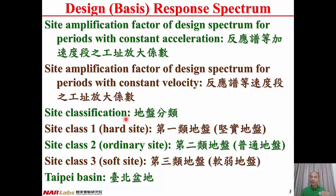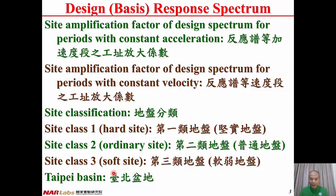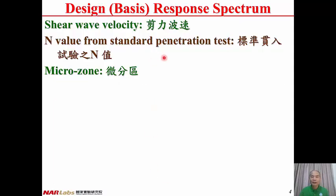There are totally four site classes. Site class 1 is used to specify hard sites. For ordinary sites, it is called site class 2. For soft sites, it is called site class 3. The fourth class is the Taipei Basin. The site is classified by the shear wave velocity, which can be estimated by the N-value from a standard penetration test. For Taipei Basin, it is divided into several micro-zones, and there are totally three micro-zones for the Taipei Basin.